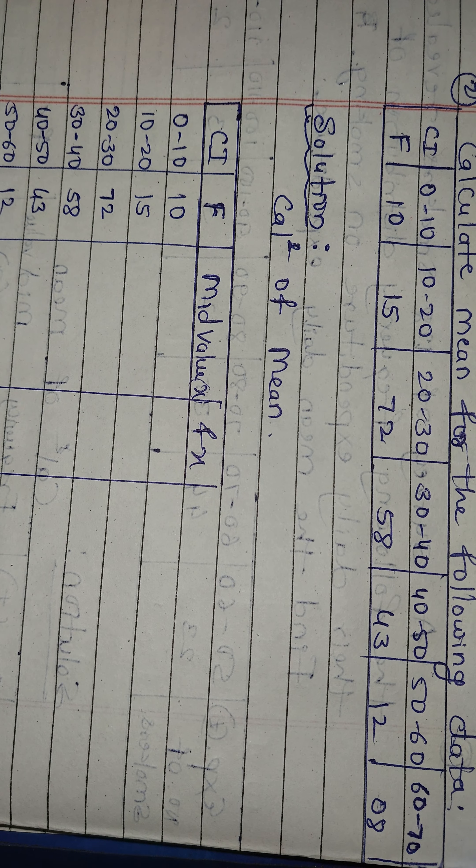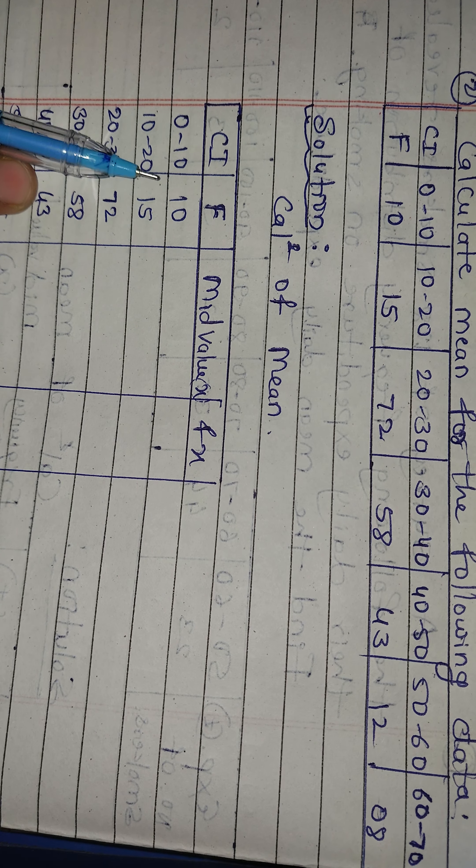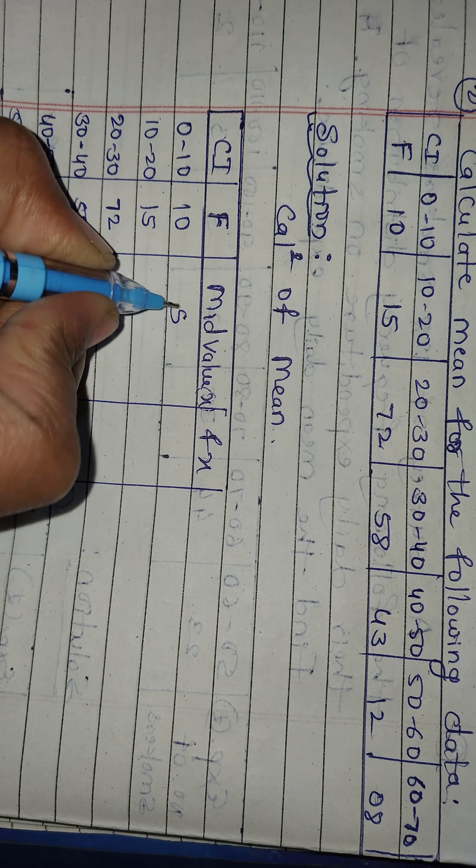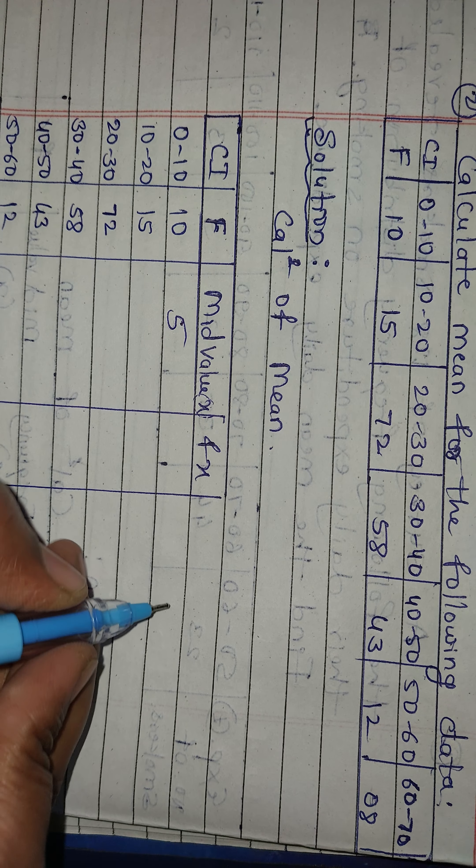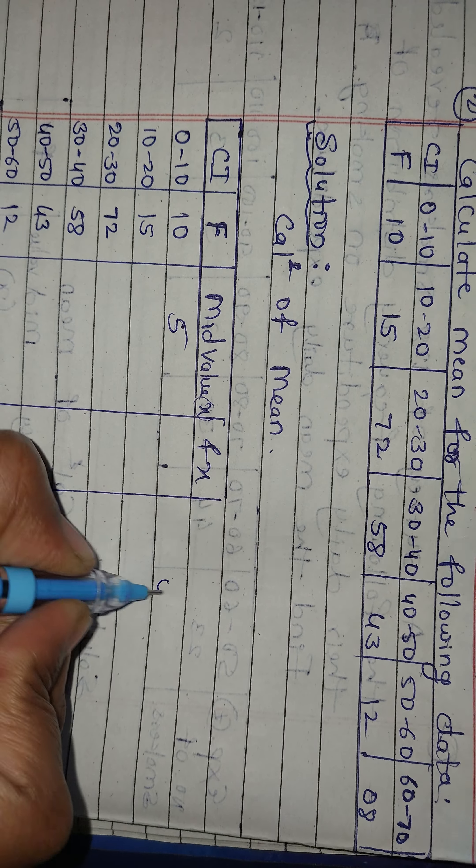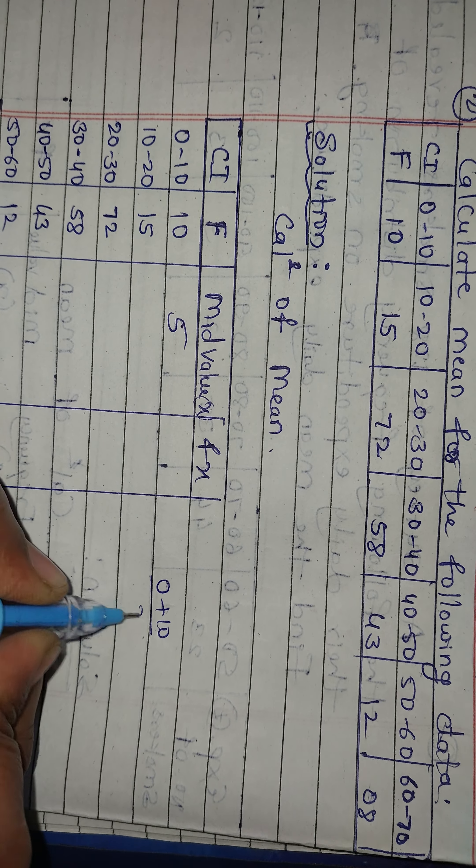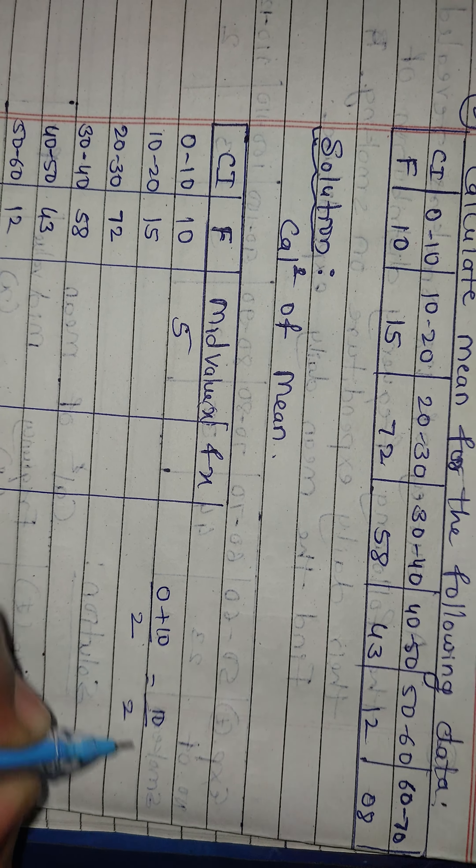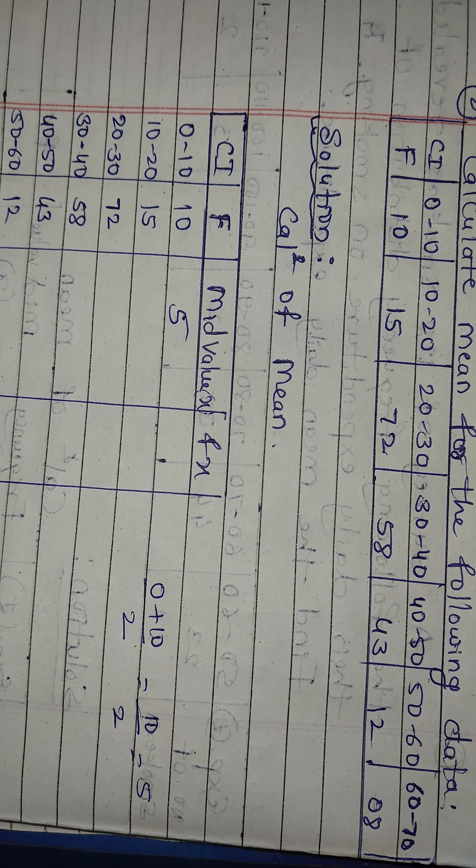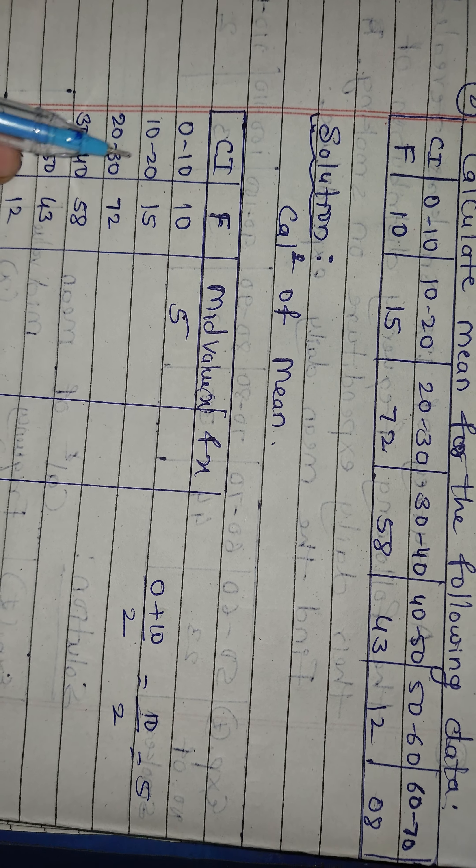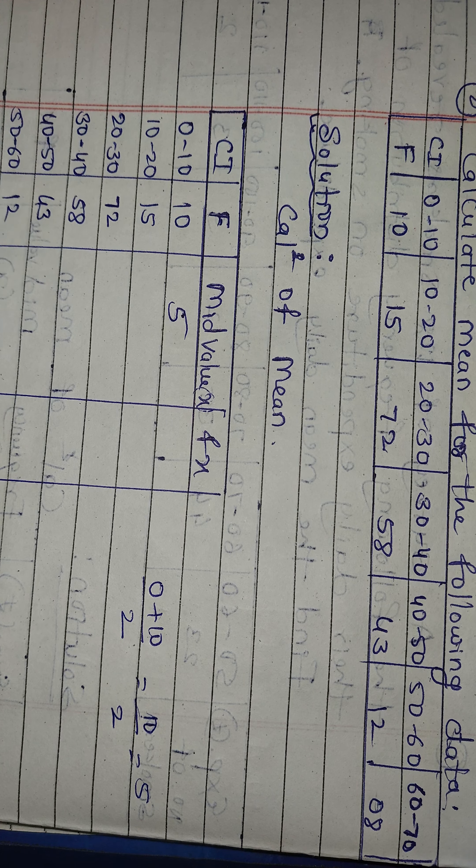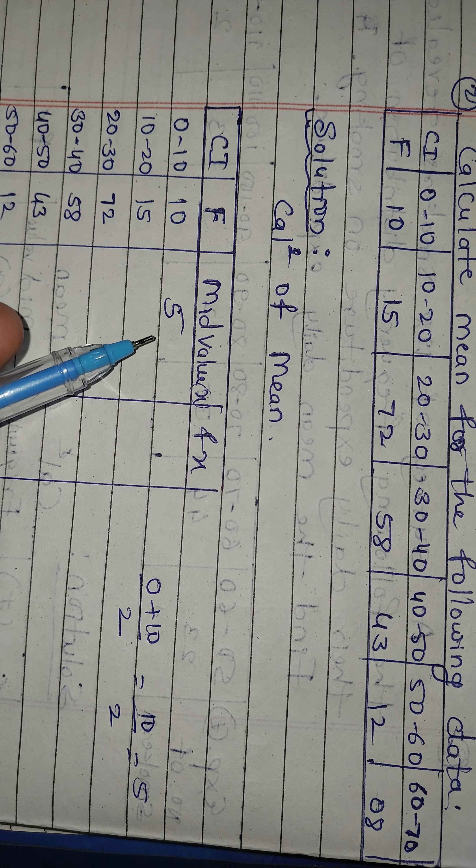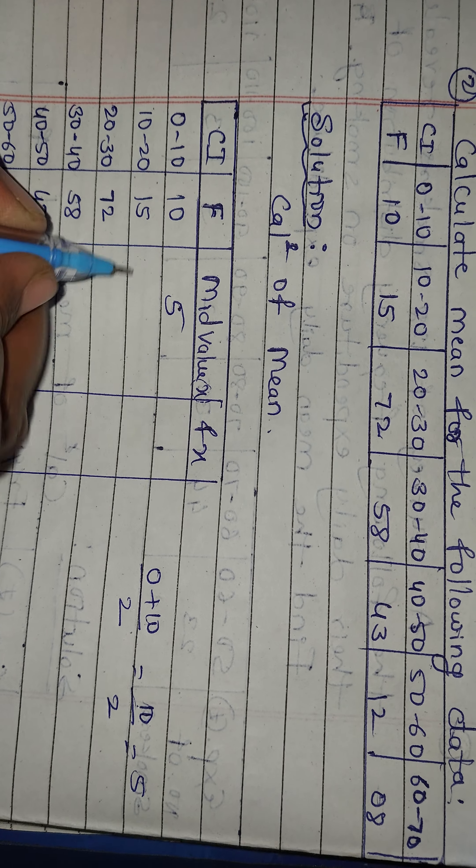This is just 5, so the middle value is 5. That is 0 to 10 here, so this is just 5. If we get this one, 0 to 10 divided by 2, so 0 plus 10 is 10 divided by 2, which is 5. We have a simple middle value.